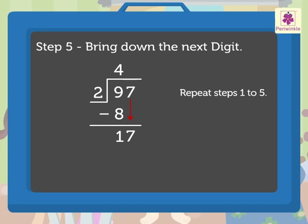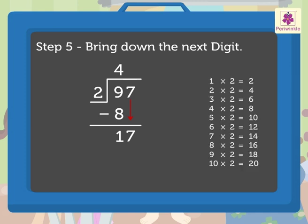So here we again compare 17 and 2. Here 17 is greater than 2, so we can divide 17 by 2. Here we use the table of twos such that the product is less than or equal to and nearest to 17. The nearest product is 16, so we write 8 above the 7.